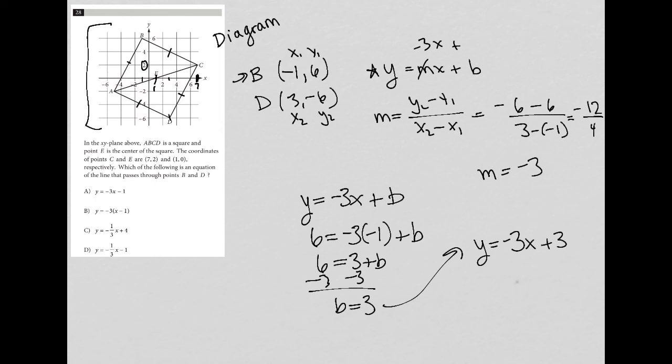There's my slope intercept form. So I look at my answer choices, and I don't see that as an option anywhere. But which one of these is equivalent to Y equals negative 3X plus 3? So definitely not choice A. Choice B, if I were to distribute negative 3 across, would be negative 3X plus 3. So that must be the right answer.